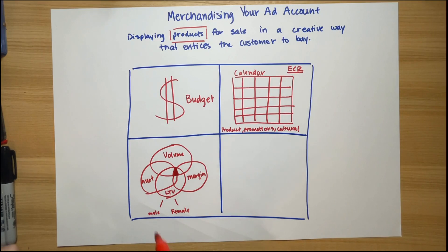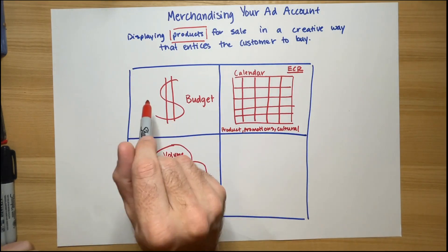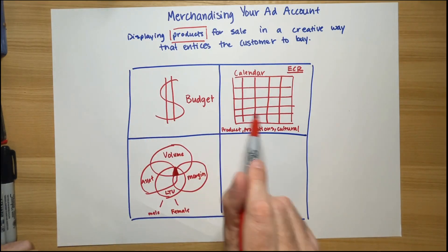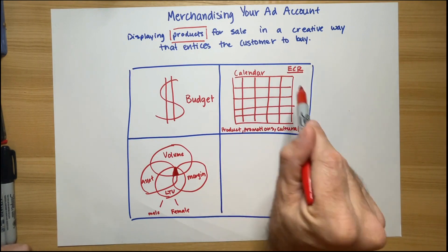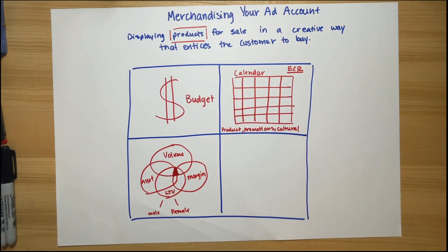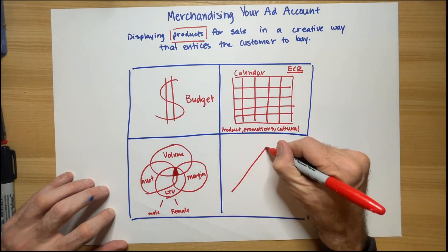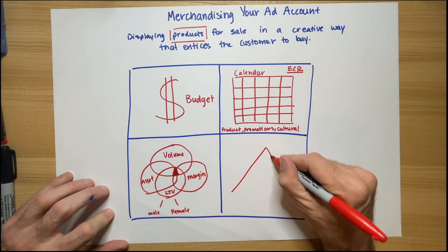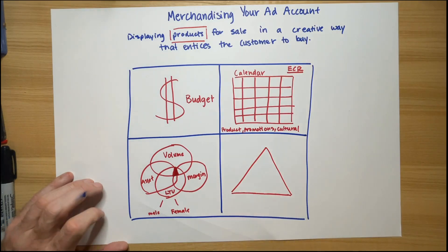So, my budget determines how many products I can show. I start with the imperative moments that drive the calendar as my first consideration. The second is the overlap of the four concentric circles. And then finally, it has to do with my ideas and what we call the creative pyramid or creative triangle.